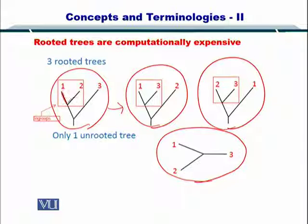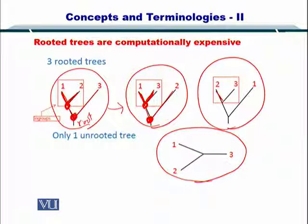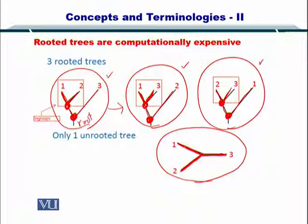Here, 1 and 2 are related to an internal node and 3 and the internal node are then related through the root. The situation can be different wherein 1 and 3 are related and then 2 comes in and gets connected by the root. Or 2 and 3 are related, which is different from the previous two cases, and 1 is related to 2 and 3 through the root — so there can be 3 different rooted trees. But the unrooted tree can represent this entire information with just one simple tree.